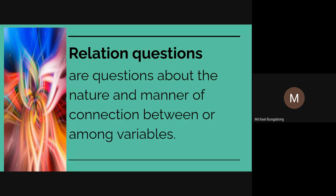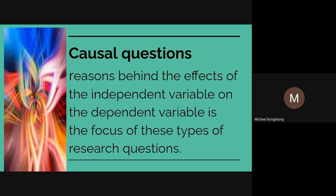Relation questions are questions about the nature and manner of connection between or among variables. We have already identified different types of variables, including independent and dependent variables. Causal questions are another type of research question — the focus is on the reasons behind the effects of the independent variable on the dependent variable. Looking back at the Miss Sudusta scenario, these types can help you distinguish which of the two questions provided earlier is the correct one.